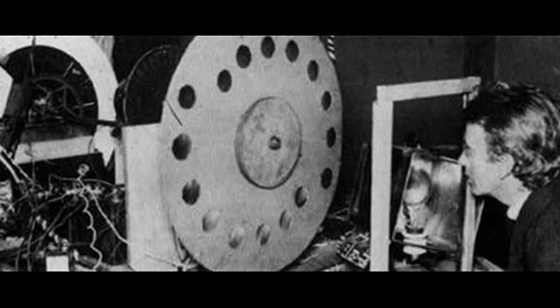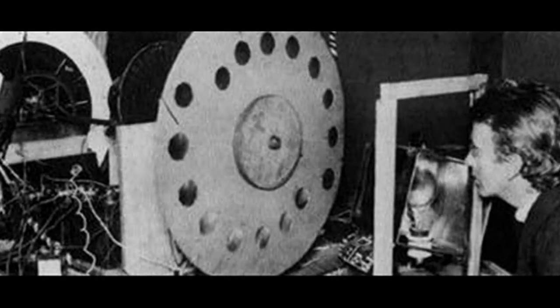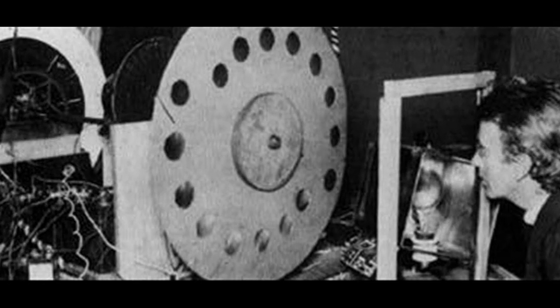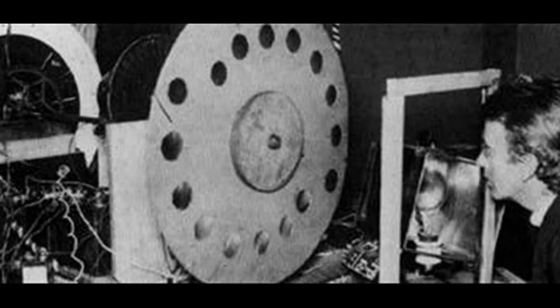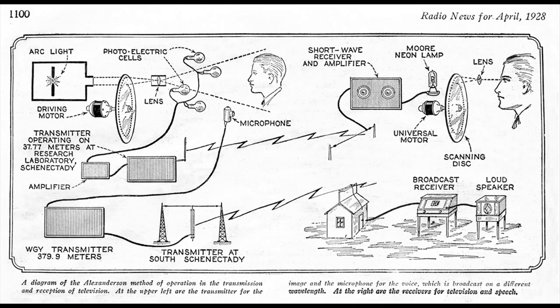During the first TV demo, visitors were shown a transmitting machine consisting of a large wooden revolving disc containing lenses, behind which was a revolving shutter and a light-sensitive cell. It was explained that by means of the shutter and lens disc, an image of articles or persons standing in front of the machine could be made to pass over the light-sensitive cell at high speed.